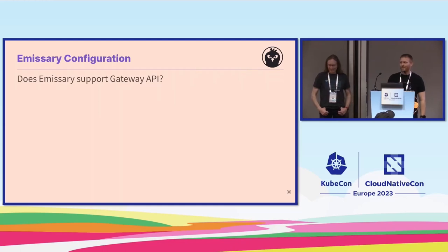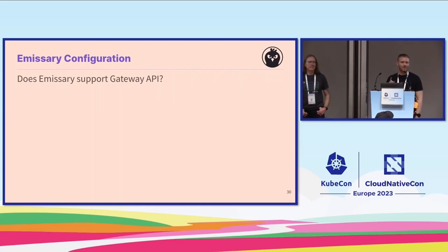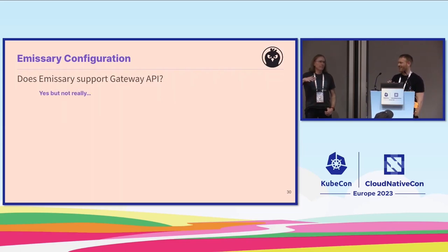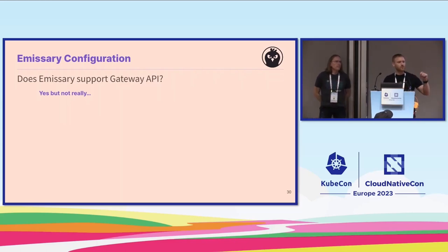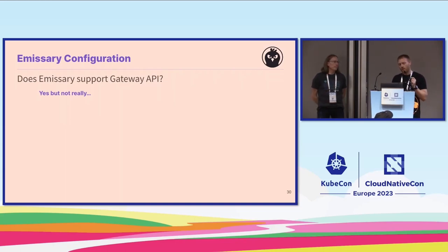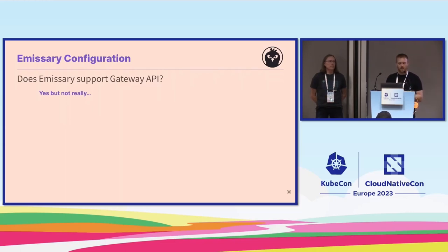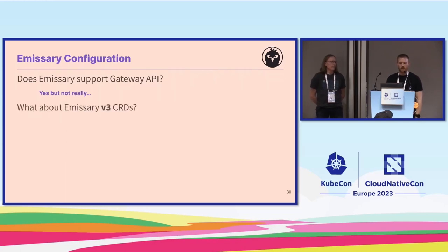You're probably asking: does Emissary Ingress support the Gateway API? The answer is yes, but not really. If you go to our docs today you can find the Gateway API there, but it's a much older version. That's why we've been spending time getting familiar with it — working with the Gateway API team and with Envoy Gateway to understand it better. Another question is: what about the V3 CRDs we just showed? Are those going away? Will Gateway API replace them?